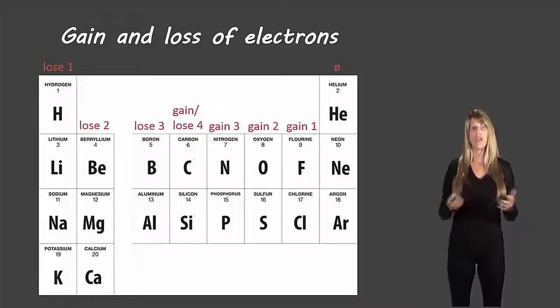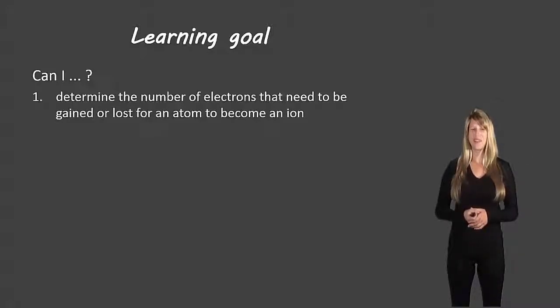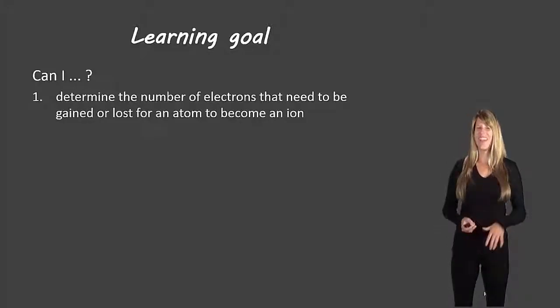So let's take another look at our learning goal. You should be able to determine the number of electrons that need to be gained or lost for an atom to become an ion. If you can do this, fantastic. If not, please rewatch the video, and if you're still having trouble, come ask me in class tomorrow. All right, that's all for now. Bye!